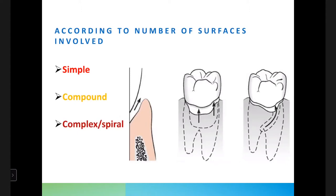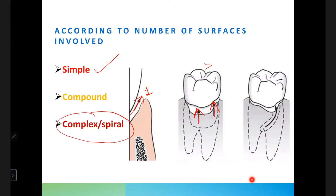A simple pocket involves only one tooth surface. A compound pocket involves more than one surface. A complex or spiral pocket originates on one tooth surface, twists, and involves another tooth surface — its axis is not straight. For example, a simple pocket is only on the mesial aspect; a compound pocket has involvement of the facial and mesial aspects; a complex pocket starts on one surface and twists to involve another.